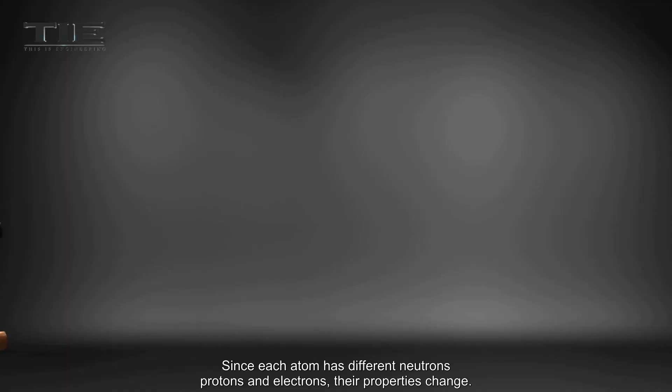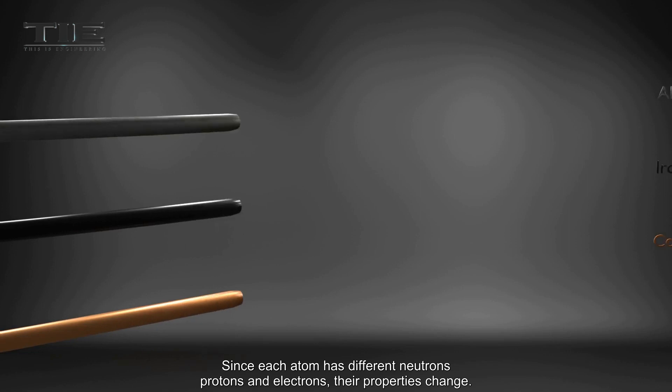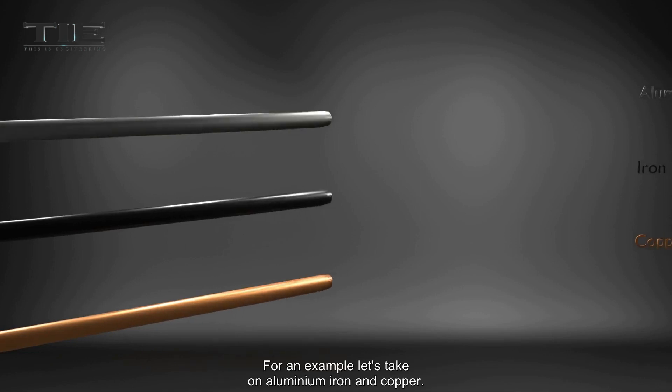Since each atom has different neutrons, protons, and electrons, their properties change. For an example, let's take aluminum, iron, and copper.